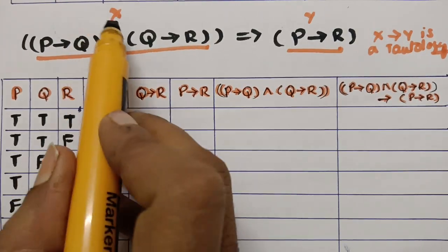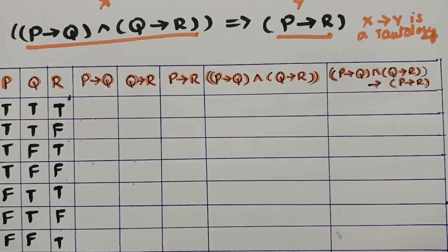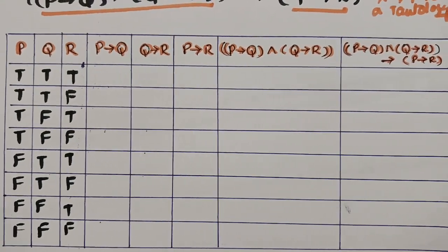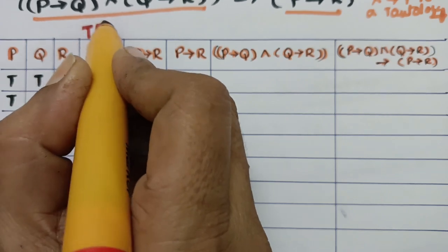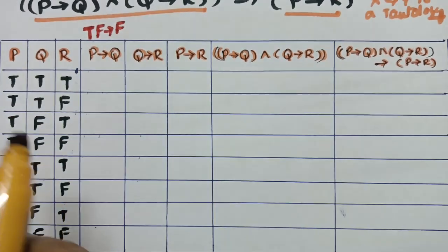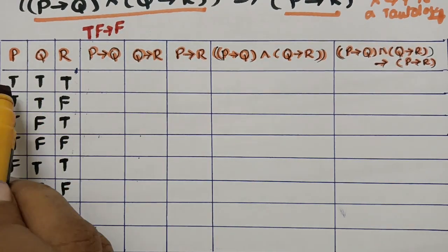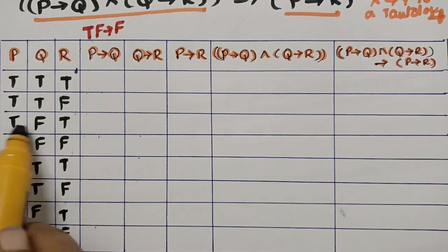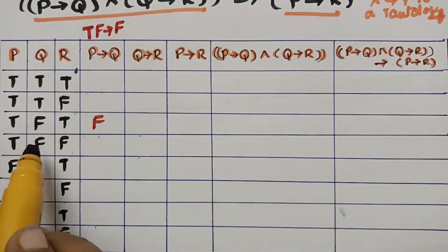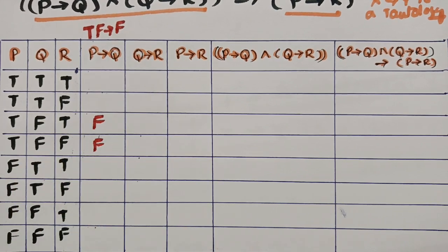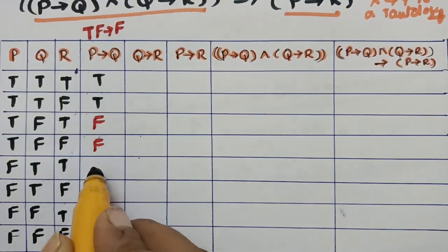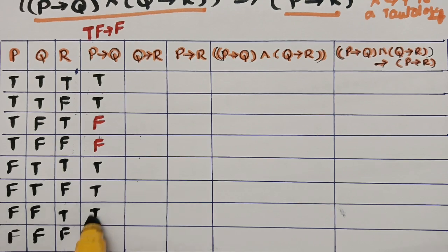Now compute p→q. For implication, if there is true first and false second, immediately write false. Comparing p and q: there is a true-false pair — write false; another true-false — write false. The remaining entries are all true: true, true, true, true, true, true.